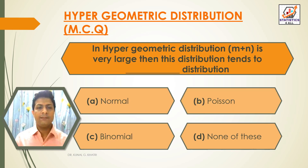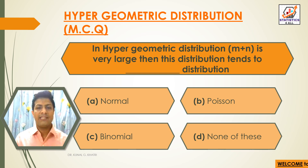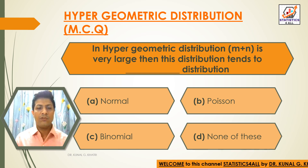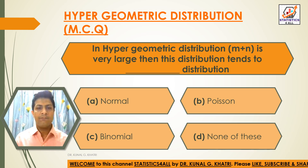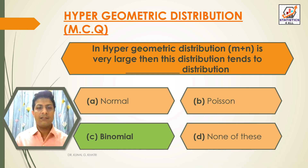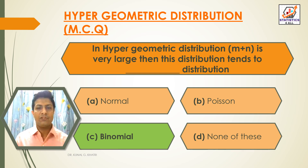Next question: In Hypergeometric distribution, if m plus n is very large, then this distribution tends to which distribution? Option A: Normal, Option B: Poisson, Option C: Binomial, Option D: None of these. The answer is Option C — Binomial. When m+n is very large, Hypergeometric distribution tends to Binomial distribution.